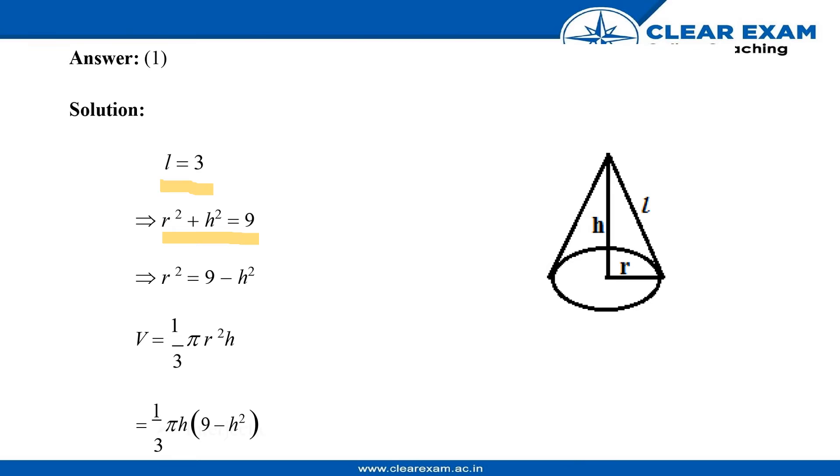Now taking the h value on the other side, we will obtain the value of r², and we will substitute the value of r² into the formula for volume, that is V = (1/3)πr²h. After substituting the value of r² into the equation of volume...